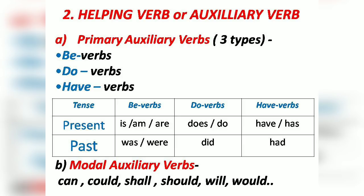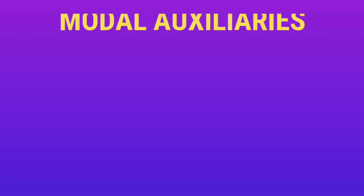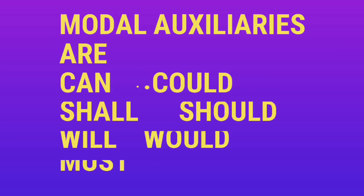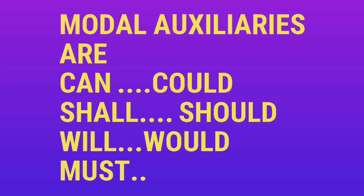In present tense, the be-verbs are: is, am, are. Whereas in past tense, the be-verbs are: was, were. In present tense, the do-verbs are: do, does. Whereas in past tense, the do-verb is: did. In present tense the have-verbs are: have, has, whereas in past tense the have-verb is: had.